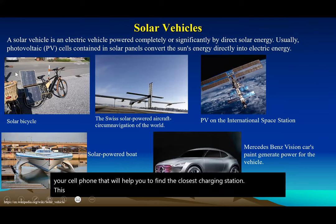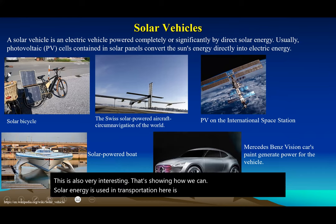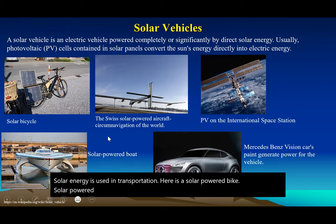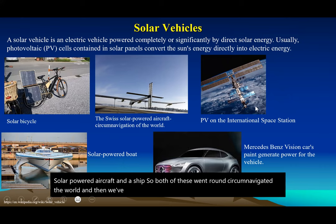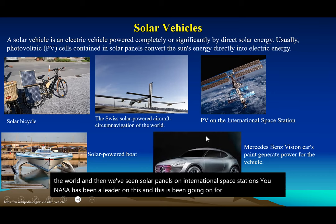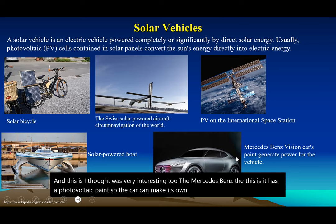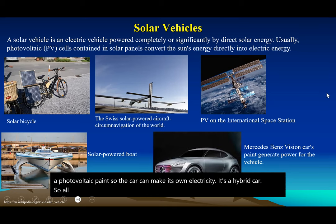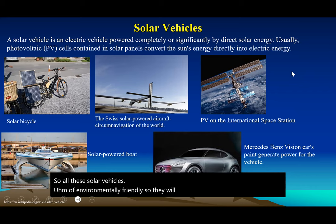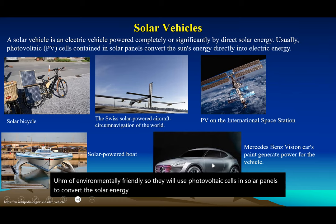Solar energy is also used in transportation. Here is a solar-powered bike, solar-powered aircraft, and a ship — both the aircraft and ship circumnavigated the world. Solar panels on the International Space Station have been led by NASA for decades. The Mercedes-Benz has a photovoltaic paint so the car can make its own electricity — it's a hybrid car. All these solar vehicles use photovoltaic cells and solar panels to convert solar energy into electrical energy to drive the vehicle.